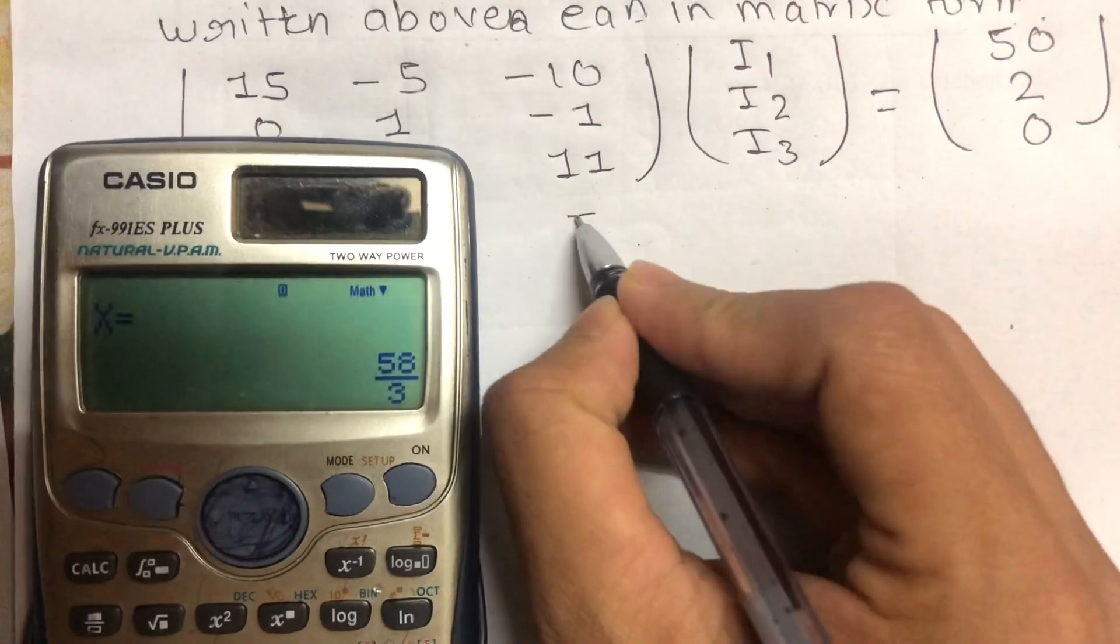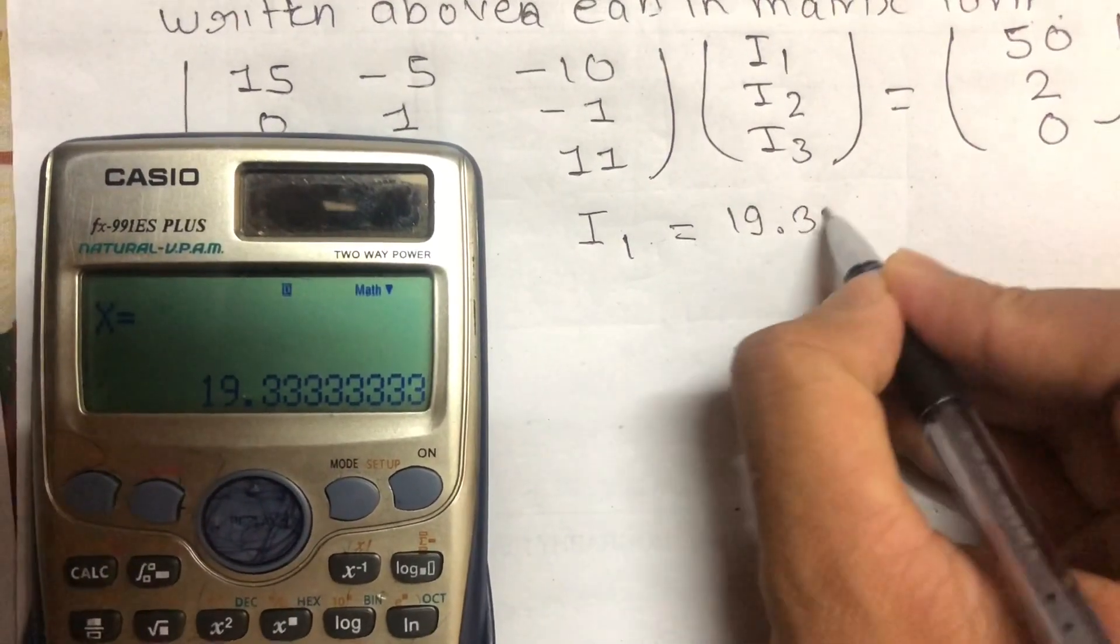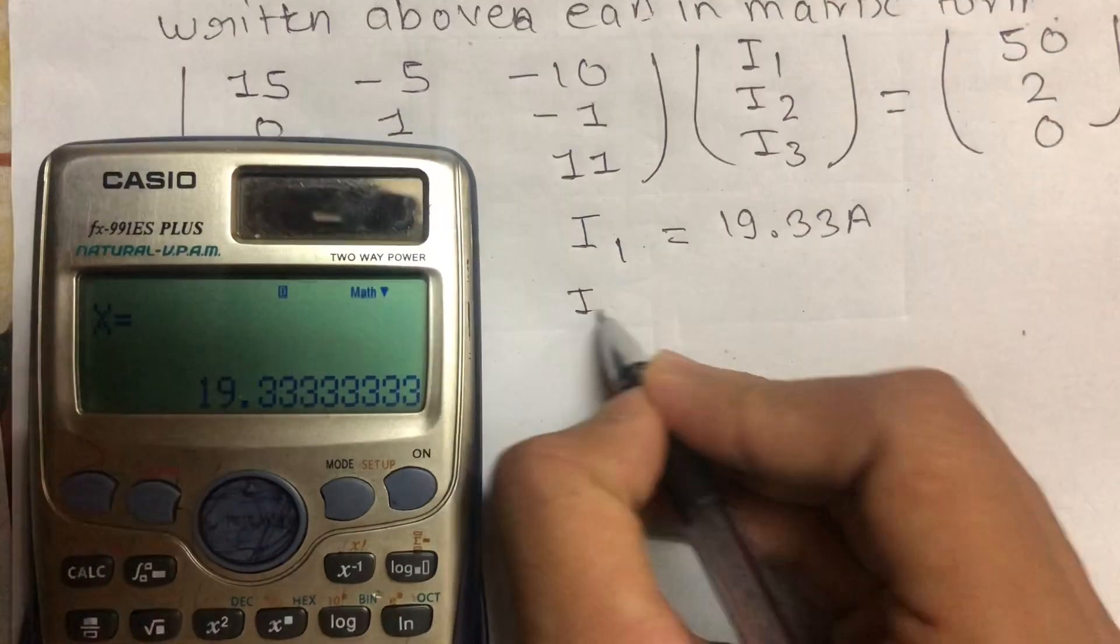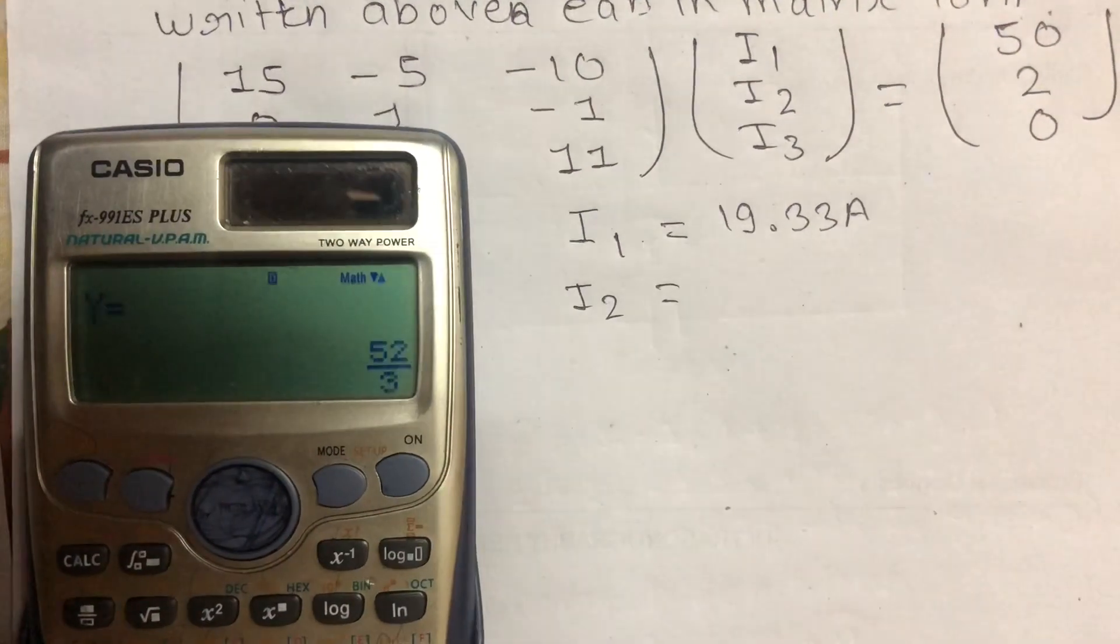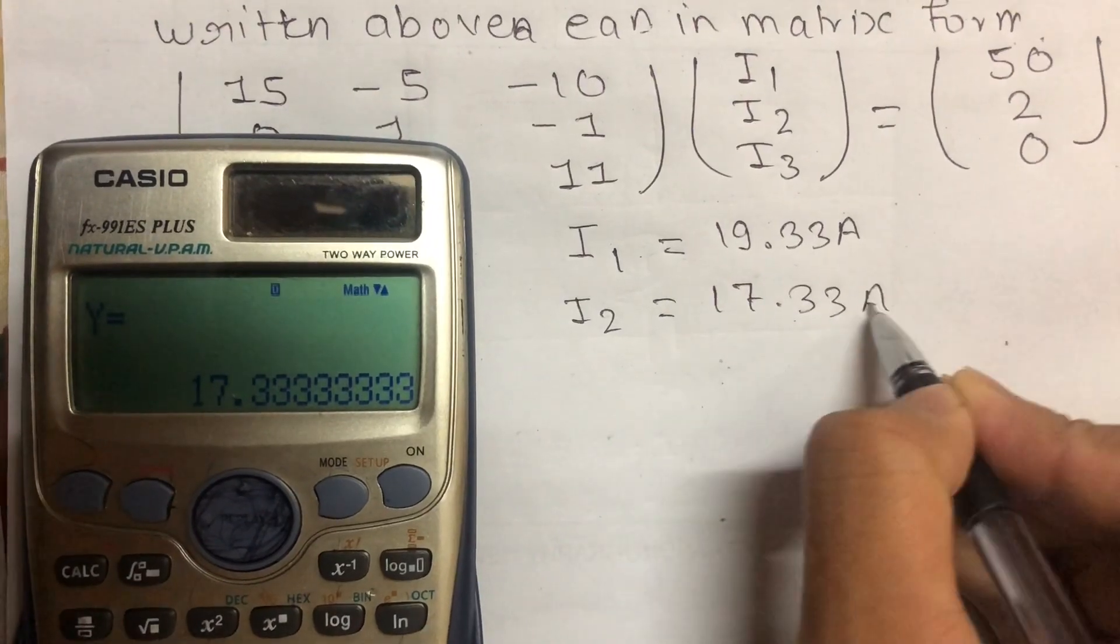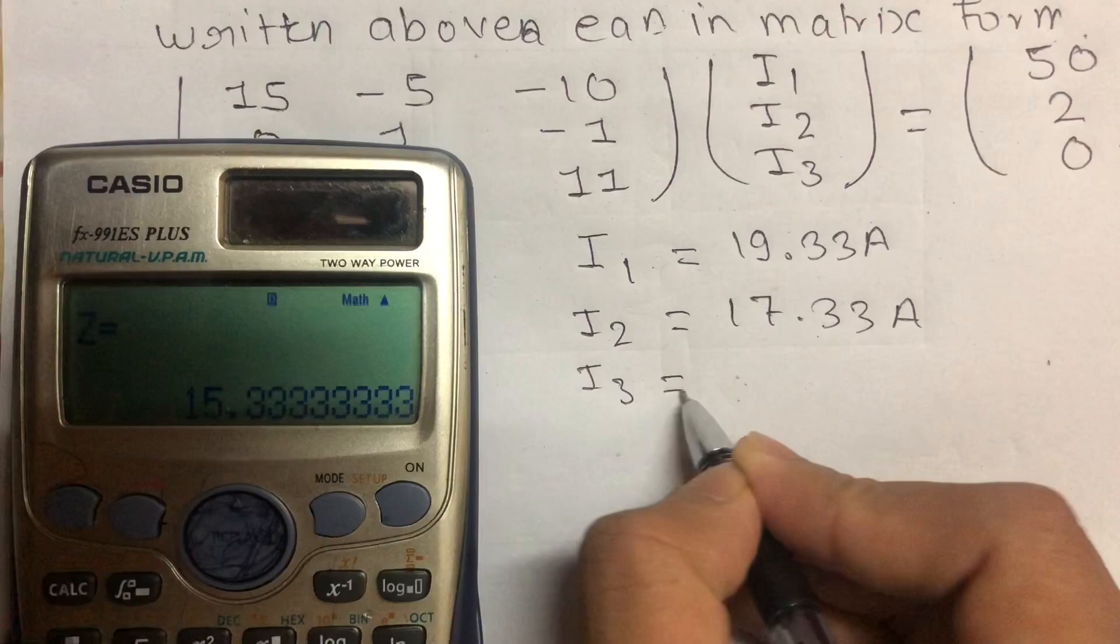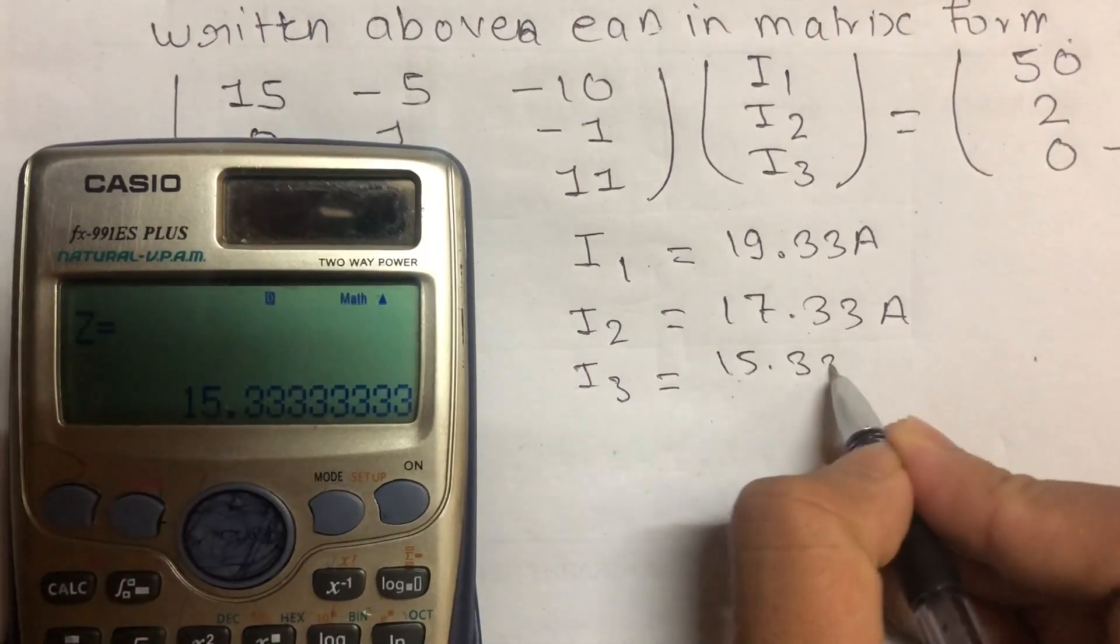The results are: I1 equals 19.33 ampere, I2 equals 17.33 ampere, I3 equals 15.33 ampere.